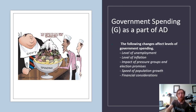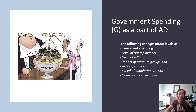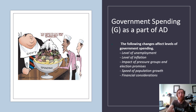Things that affect government spending: the level of unemployment — the more unemployment, the more welfare the government has to pay. The level of inflation — if too high, the government needs to slow spending down; if too low, they need to stimulate it. The impact of pressure groups and election promises. Population growth and financial considerations — our government has been in deficit for quite some time and at some point needs to pay that debt back. They may cut spending and be more careful in future, because we don't want too much foreign debt causing issues in the long term.